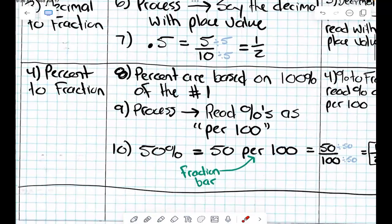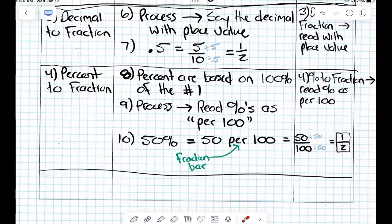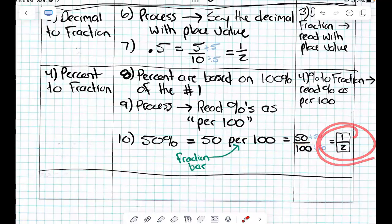Read percents as per 100. So please read this percent. Go. And what does per mean? So if we have a fraction bar, so if we have 50 with a fraction bar 100, we could simply just reduce that to 1 over 2, right?